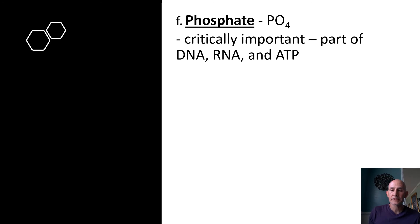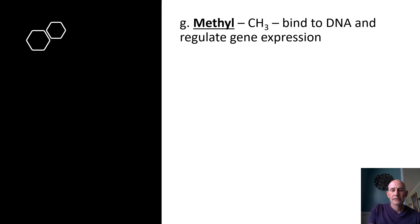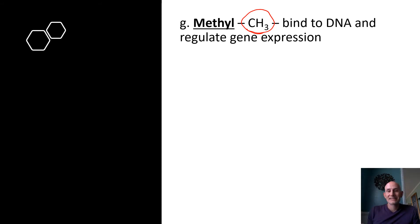Phosphates are critically important because they are part of DNA and RNA as the sides of the structures. ATP — adenosine triphosphate — is the group that gives energy to everything our cells do. Methyl groups can bind to certain parts of DNA, typically cytosine, causing the DNA to shut down and blocking gene expression. This is one of the ways our bodies regulate which genes are expressed in cells. All our cells have the same DNA, but look different because they express different genes — methylation of non-active genes is one mechanism for that regulation.